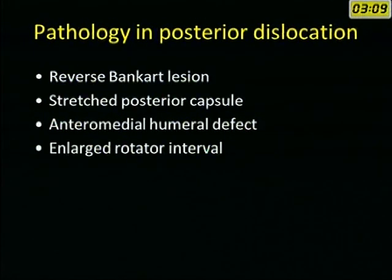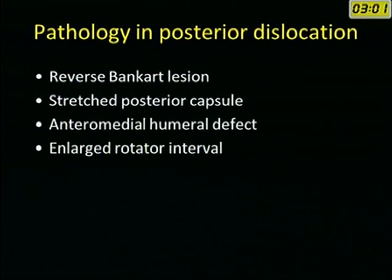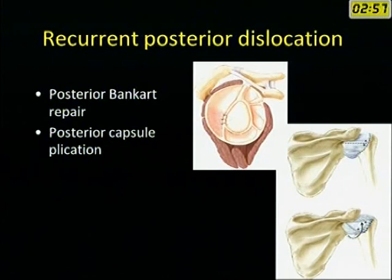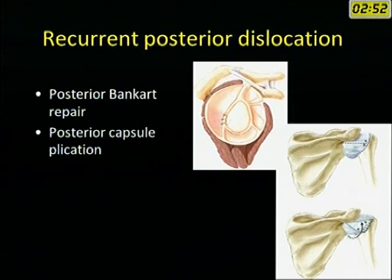In posterior dislocation, the pathology is a reverse Bankart lesion on the posterior lip, with stretching of the posterior capsule, an anteromedial humeral defect, and an enlarged rotator interval. In recurrent posterior dislocation, you can do a posterior Bankart repair along with posterior capsule plication, performed either arthroscopically or by open method.